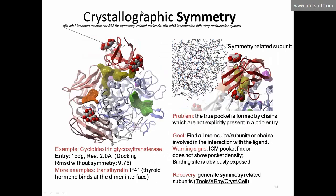Moving on to crystallographic symmetry. If you read in some crystal structures, the problem is that the PDB file doesn't give the full symmetrical molecule. You might see a ligand appearing to hang in space with no surrounding protein — the reason it binds is because of a symmetry-related subunit. We have an example: 1CDG. The true pocket is formed by multiple chains that are not explicitly represented in the PDB file, so you need to calculate the symmetry-related subunit. To do that, go to Tools, then X-ray, then 'Crystallographic Neighbor,' and generate the crystallographic neighbors around the site.